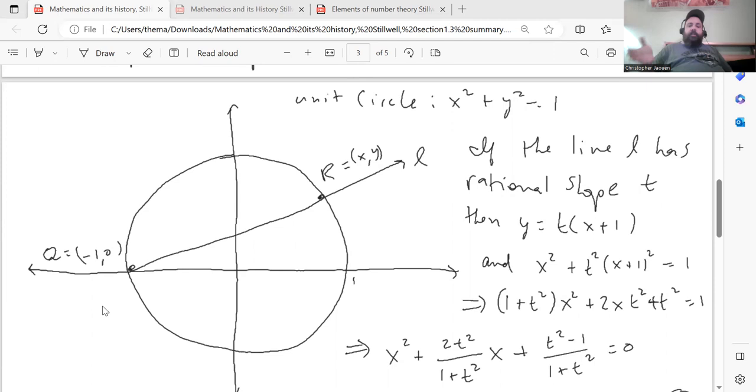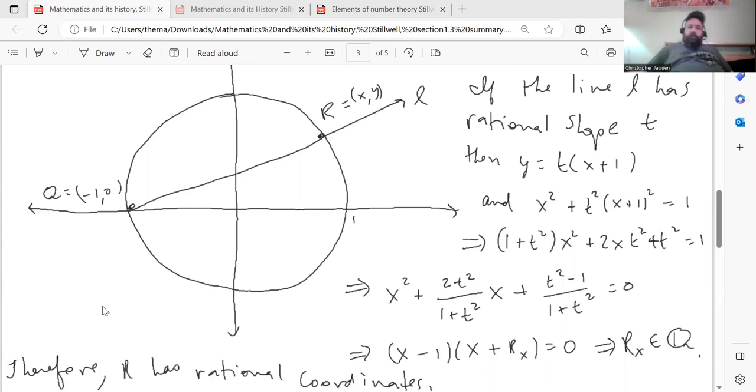For example, if x is minus 1 and y is 0, that's the solution, right? Because minus 1 squared plus 0 squared is equal to 1. If you draw a line that has rational slope t, and that passes through the point q, then the equation of that line will look like y equals t times x plus 1. If you take that value for y and you plug it into the equation for the unit circle, you get this quadratic equation here.